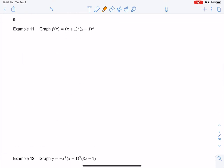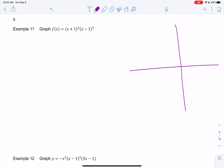So this one's already factored for you. We have x plus 1 squared and x minus 1 cubed. So let's just start with end behavior.